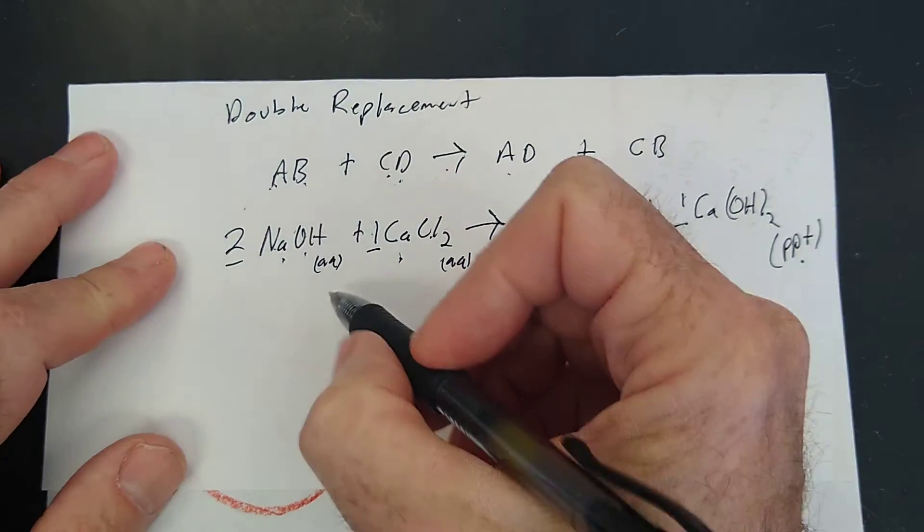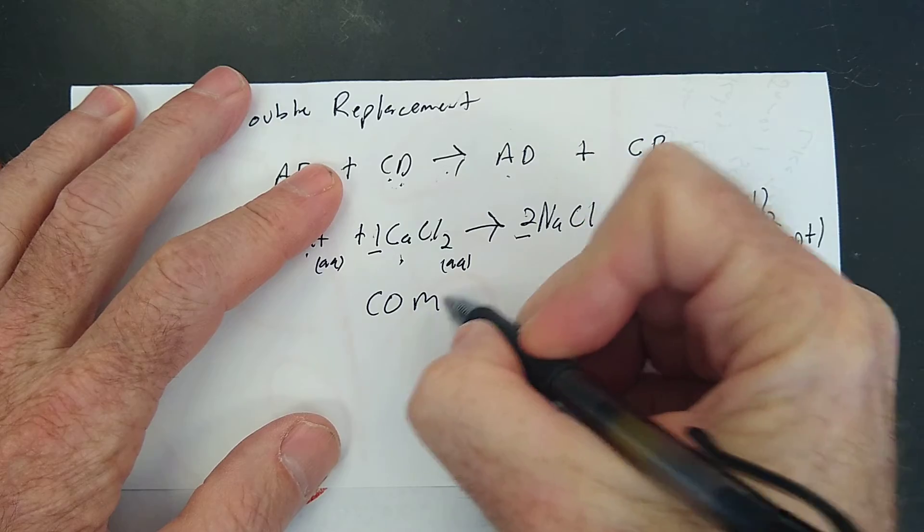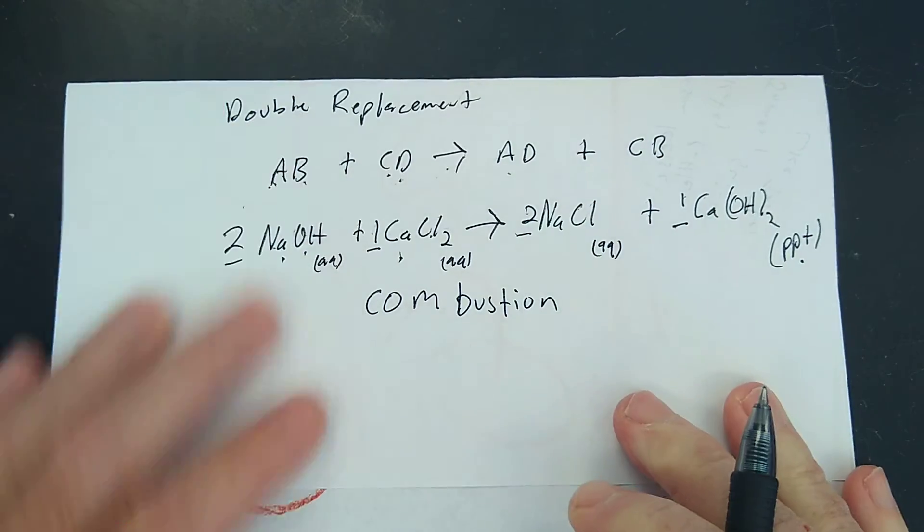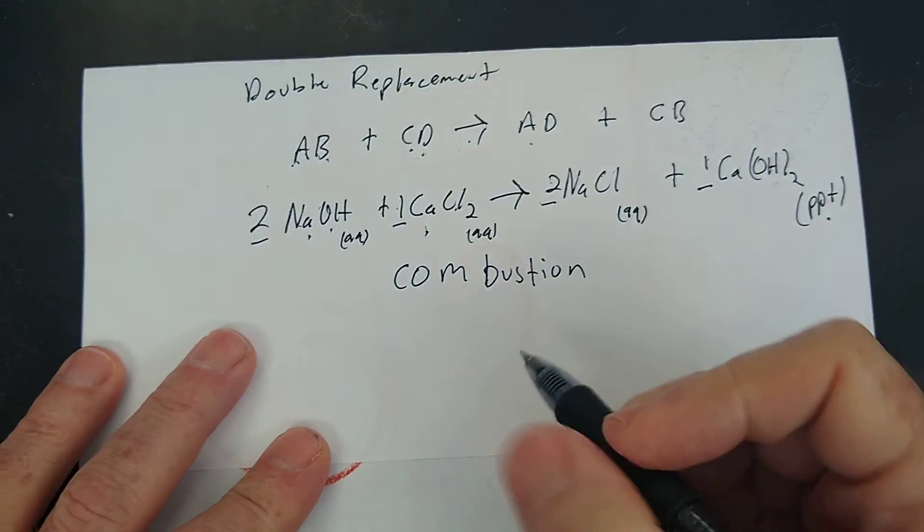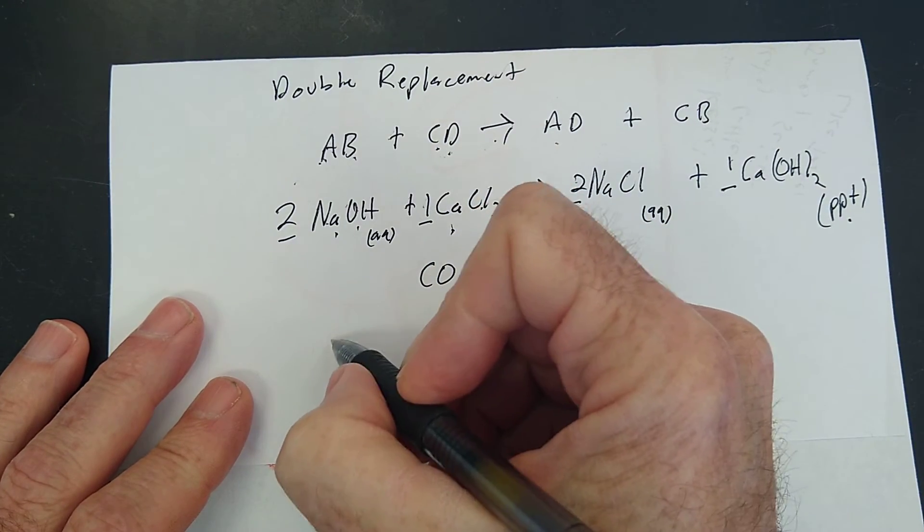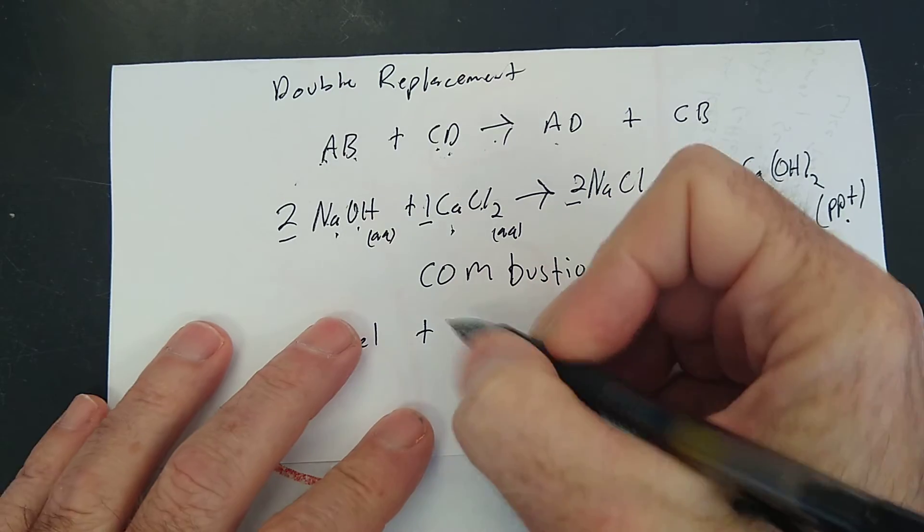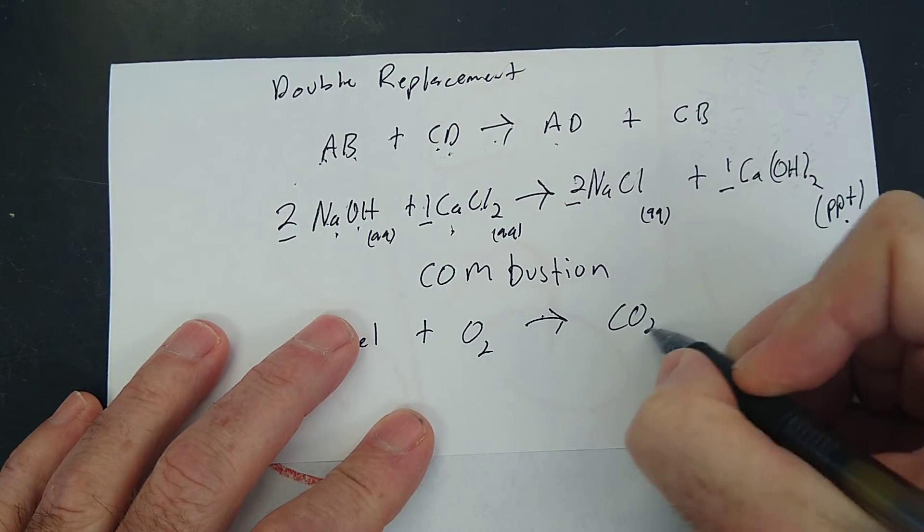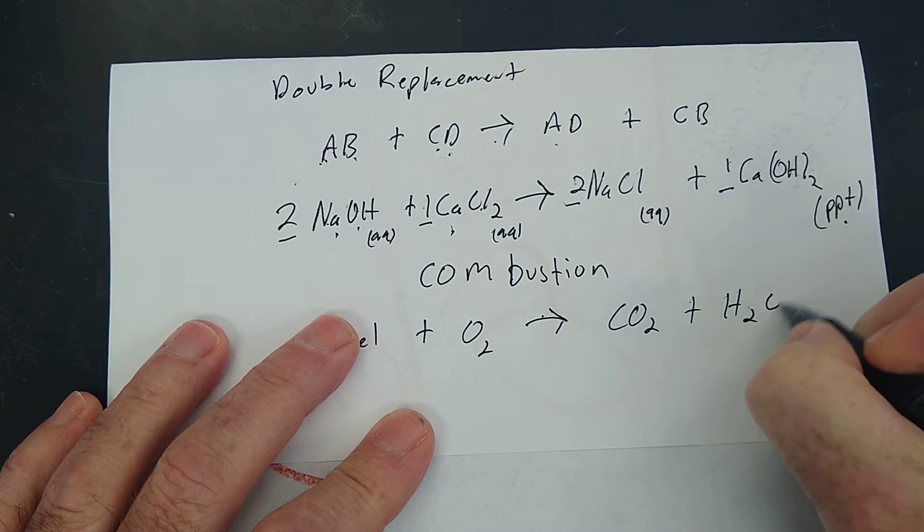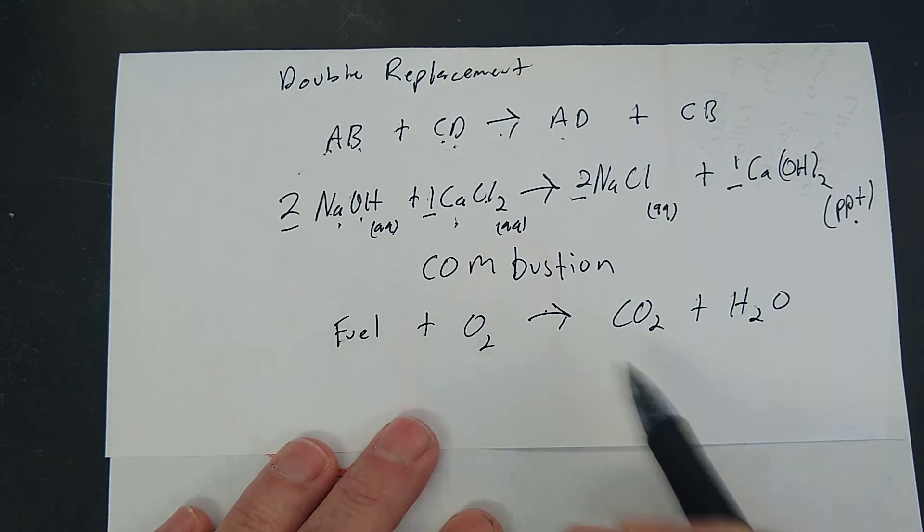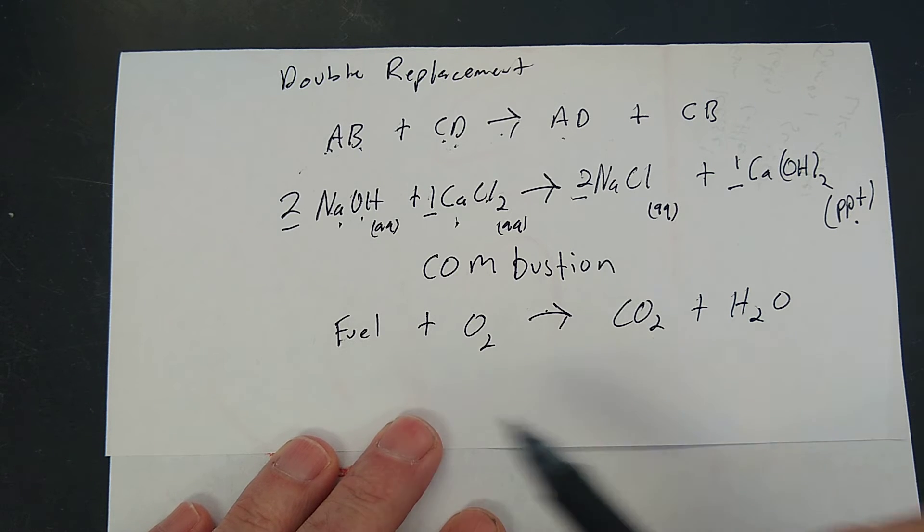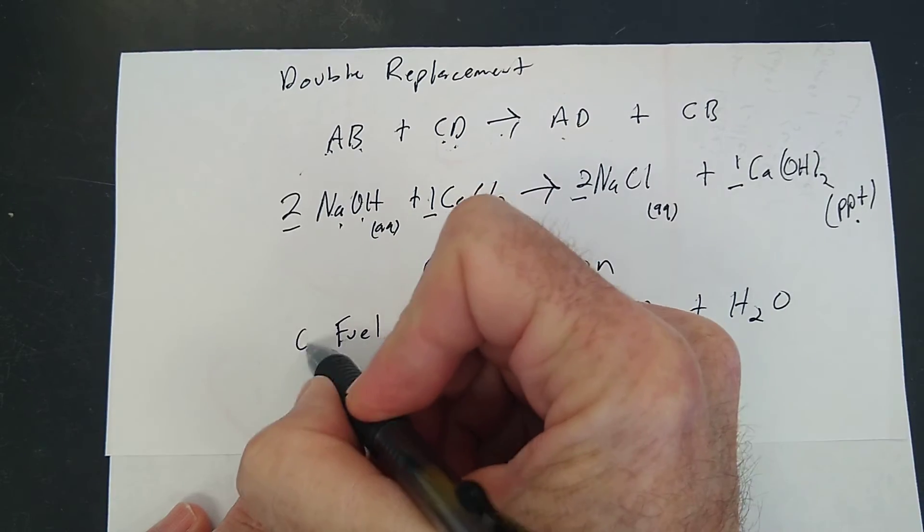And the last one is called combustion. The fifth type of chemical equation is called combustion. And that is basically when a fuel plus oxygen makes carbon dioxide and water. That's a combustion reaction. And this is a photosynthesis. This is plants burning sugars. And when I say a fuel, it's got a carbon in it.